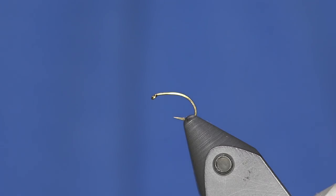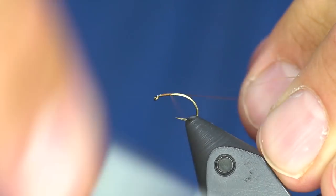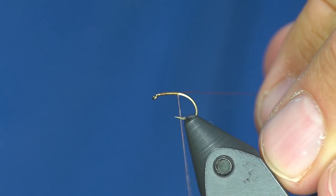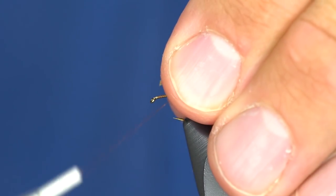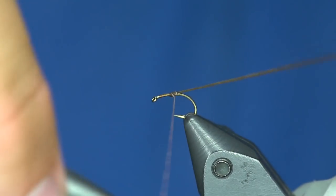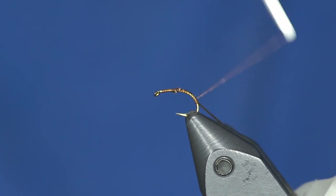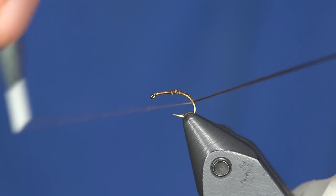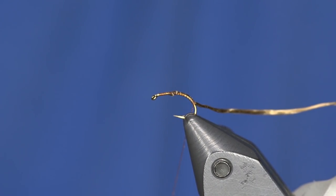All right, so I'm gonna put on some 8/0 camel uni-thread. This is a pretty simple pattern. I'm gonna take some span flex, I think this is brown or brown olive. You could even do like chartreuse on this one to rib it, to give it some effect. I'm gonna tie down the bend a little bit. That's too far. Right there's good.